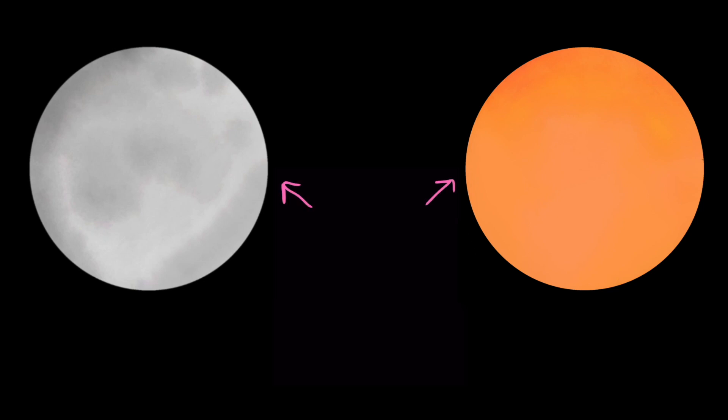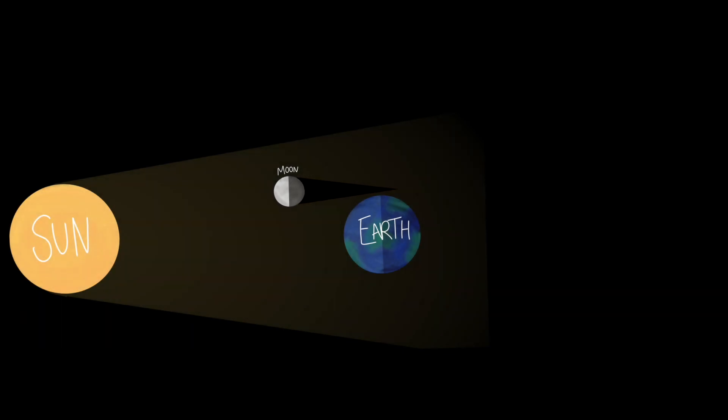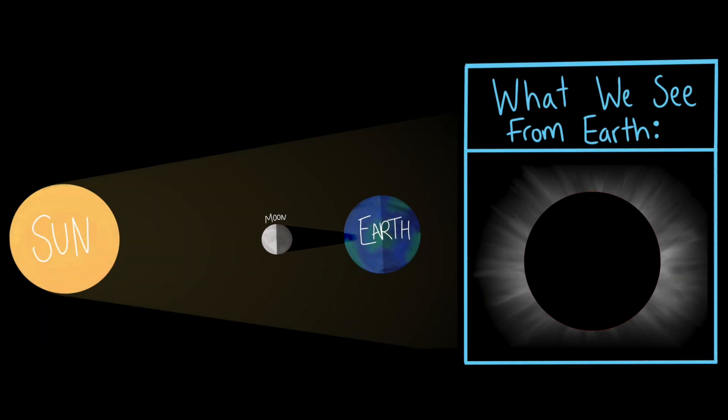However, coincidentally, the sun is far enough away that the moon and the sun appear to us Earthlings to be the same size in the sky. So when the moon moves between the sun and Earth during a total solar eclipse, it appears from Earth to cover the disk of the sun almost exactly.